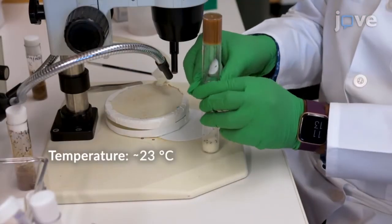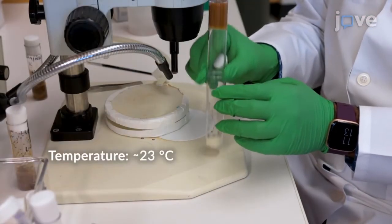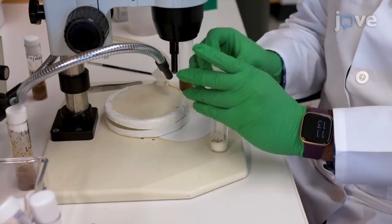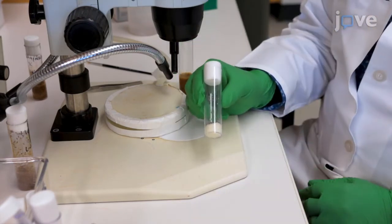Before the experiment, starve the flies for 24 hours at room temperature in a vial containing a laboratory wipe tissue soaked with approximately 2 milliliters of deionized water.